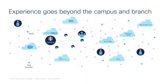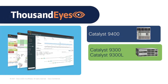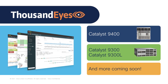When you manage a campus and branch network, your job is to deliver top-notch digital experience, regardless of where the users are and where their critical applications are located. With ThousandEyes Enterprise, agents now hosted on your Cisco Catalyst switches gain end-to-end visibility — from your campus network, to the internet, SaaS, and cloud-based services.